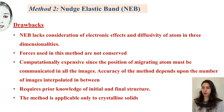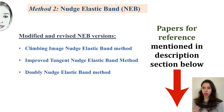Some of these drawbacks have been overcome in modified and revised NEB versions: the Climbing Image Nudged Elastic Band (CI-NEB), the Improved Tangent Nudged Elastic Band, and the Doubly Nudged Elastic Band method. I'll discuss these methods in further videos, but for now papers for reference have been mentioned in the description section below.